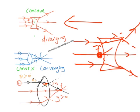So that's concave and convex lenses and how to know which rays will bend where.